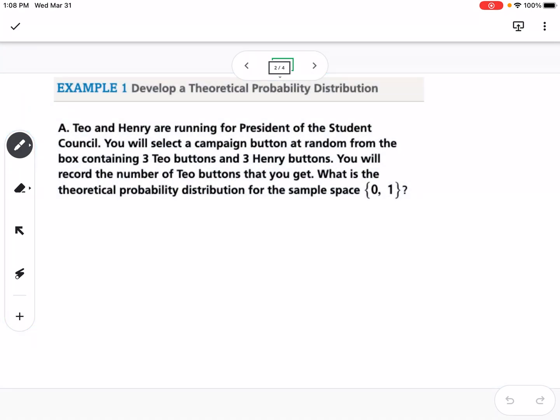Our first example is to develop a theoretical probability distribution. Tio and Henry are running for president of student council. You will select a campaign button at random from a box containing three Tio buttons and three Henry buttons. You will record the number of Tio buttons that you get. What is the theoretical probability distribution for the sample space, zero or one?